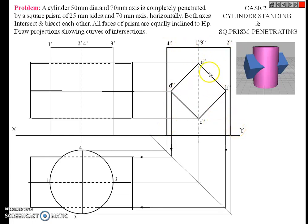Draw the side view of the second solid. After drawing the side view of the second solid, project it for the front view and project it for the top view.